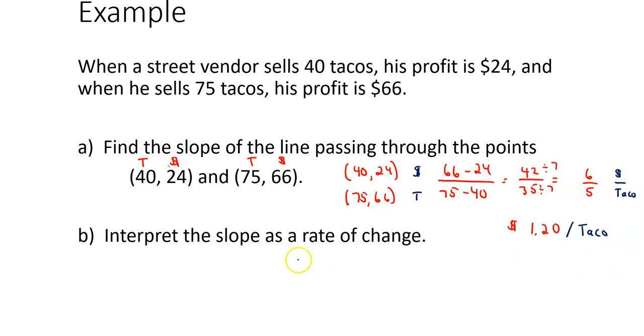So it says interpret the slope as a rate of change. What that means is that for every taco he sells, he makes $1.20 in profit. So he makes $1.20 in profit for each taco. Meaning that he's calculated the cost, how much it's going to cost him to prepare and to serve this taco. And he adds $1.20 to that cost. So for every taco he sells, he makes $1.20 in profit.